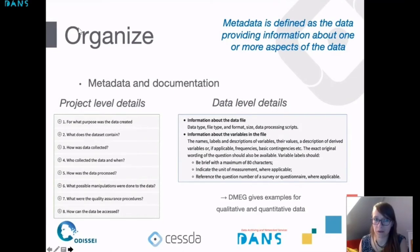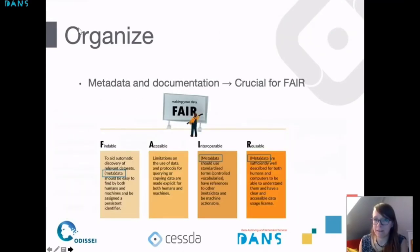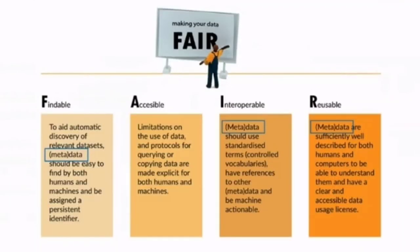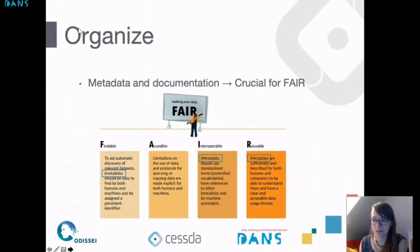For instance, if you have a survey you might classify participants as male and female using codes zero and one — writing down which is zero and which is one is very useful so you don't have to look it up every time you're looking at your data. The DMEG gives examples for qualitative and quantitative data to make this easier. Metadata and documentation is really crucial for FAIR — metadata is actually mentioned in three out of the four FAIR principles.